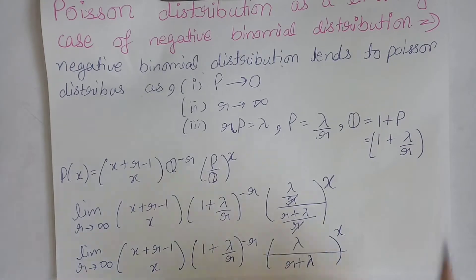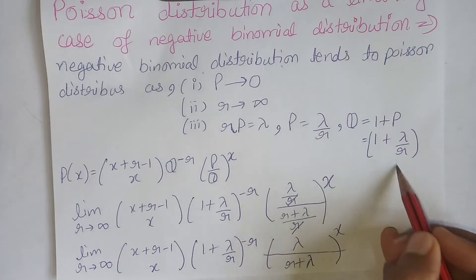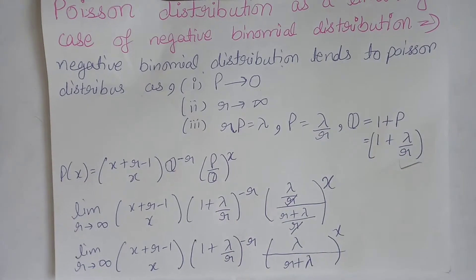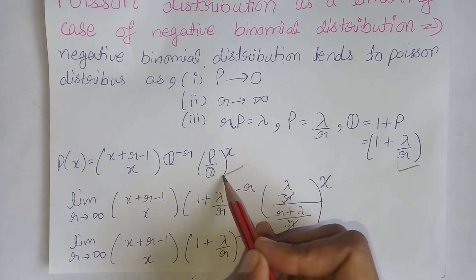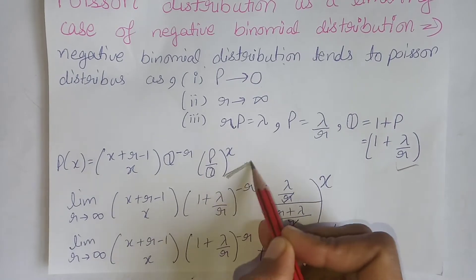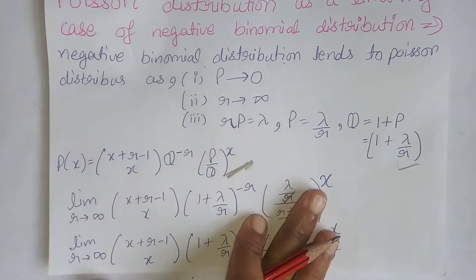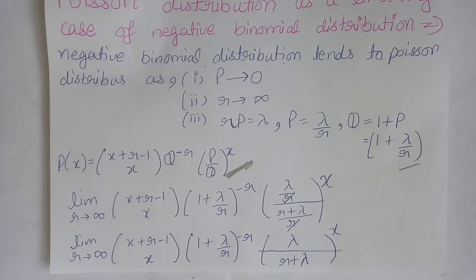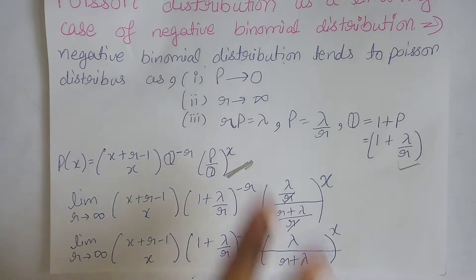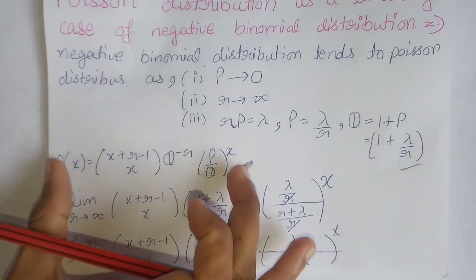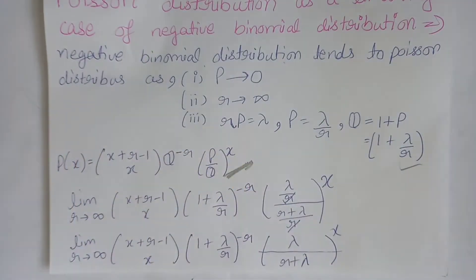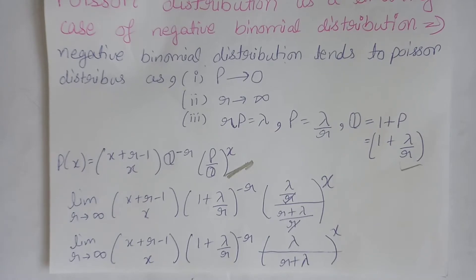Now we have these three conditions. We know that the probability mass function of the negative binomial distribution is given. We have to apply these three conditions to the probability mass function. Let's start.